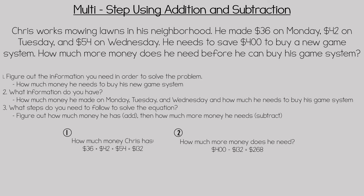How much money he has: 36 plus 42 plus 54 equals 132, so he has $132. Step two — how much more money does he need? If he needs $400 to buy the game system and he has $132, we subtract 132 from 400, which gives us 268. So Chris needs $268 in order to buy his new game system.